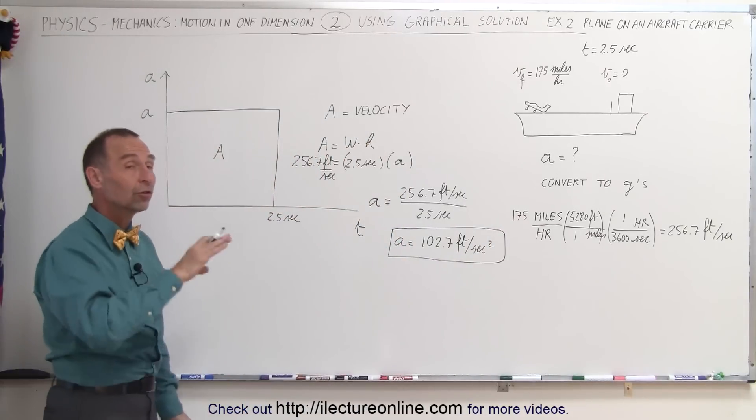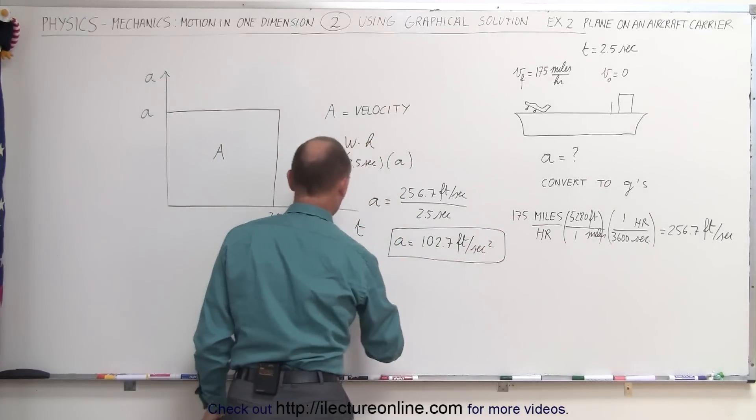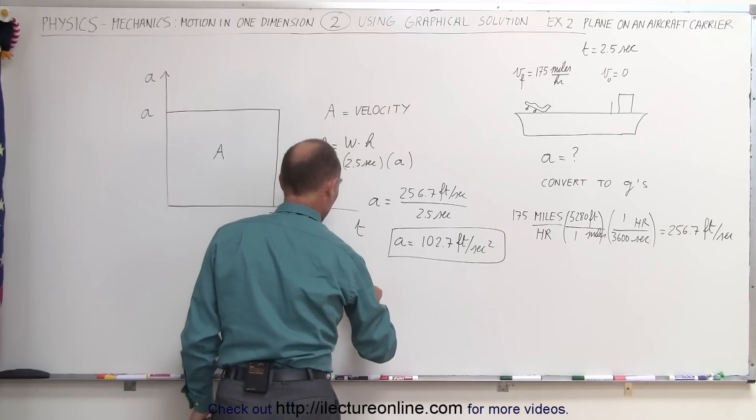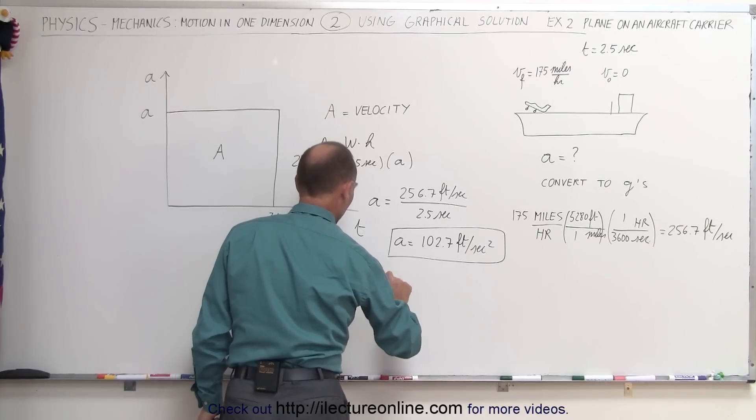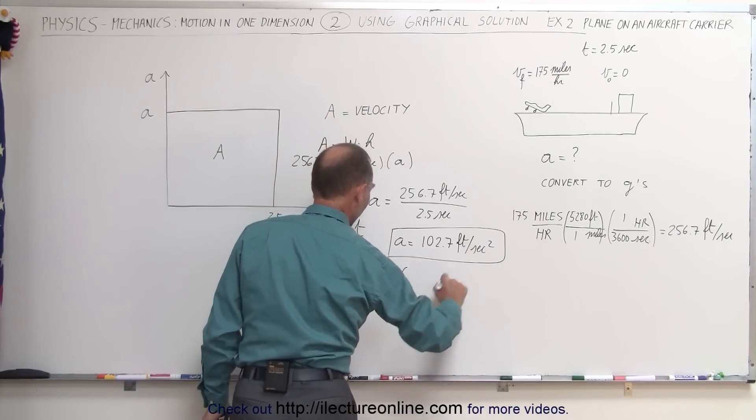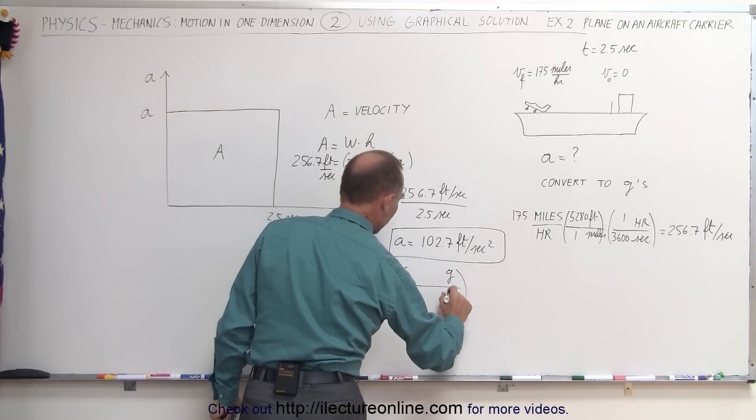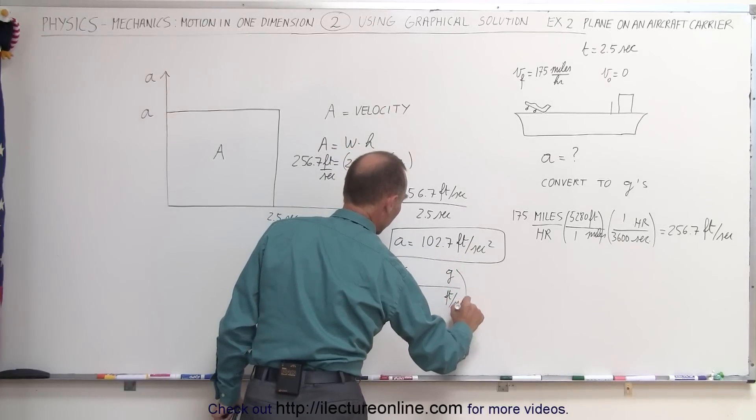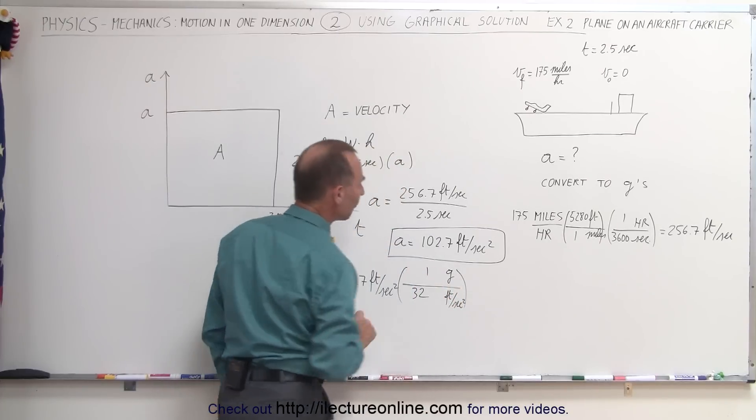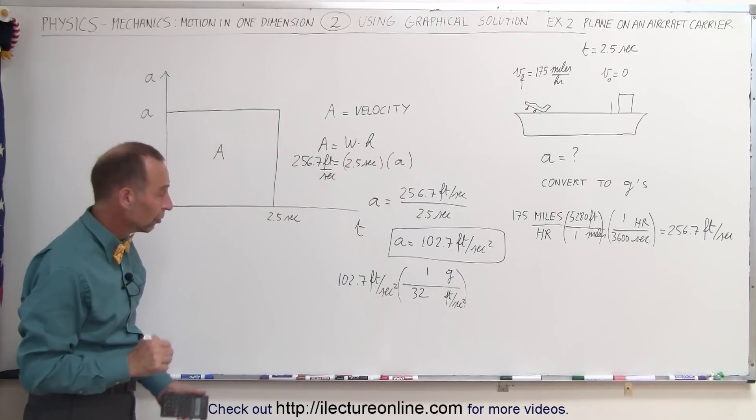Now, converting that to G's, what we need to do then is we need to take 102.7 feet per second squared times, converting to G's, of course, 1G in terms of feet per second squared. 1G is 32 feet per second squared. That's conversion.